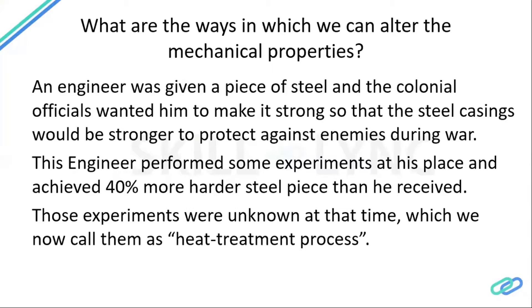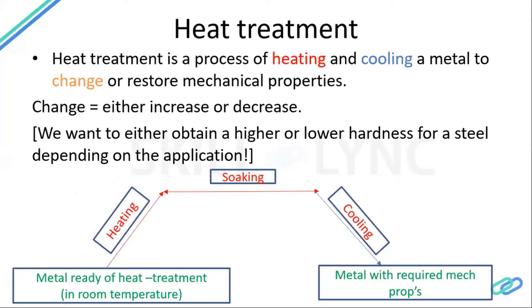Whenever I say heat treatment, you only need to remember three words: heating, soaking, and cooling. That's it. You heat a particular material, soak it, then cool it — and your heat treatment is done. This is the simplest process to change any mechanical properties.